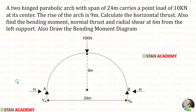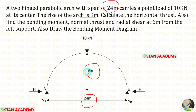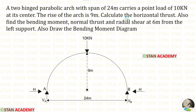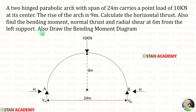Using this data we can draw the diagram. The length of the arch is 24 meters, the rise is 9 meters, and the arch carries a point load of 10 kN at the center. We have to find the horizontal thrust, the bending moment, normal thrust, and radial shear at 6 meters from the left support, and also draw the bending moment diagram.